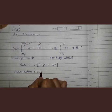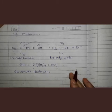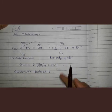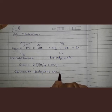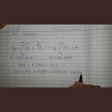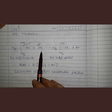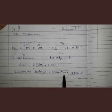SN1 stands for Substitution, Nucleophilic, and Unimolecular — because the rate of reaction depends upon only one reactant. In SN2 we studied that the rate depends upon both methyl bromide and the nucleophile, so that reaction was bimolecular. Here, since the rate depends only on tertiary butyl bromide, it is a unimolecular reaction.